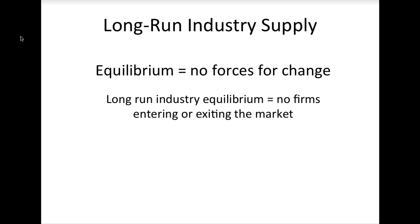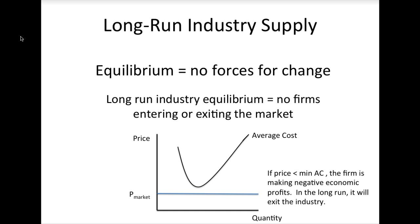In order to figure out what conditions will characterize long-run equilibrium, it is useful to think about the problem from a single firm's perspective. Recall that in the long run, if the market price is below the minimum of a firm's average costs, the firm will shut down and exit the industry because it is making negative economic profits. Thus, this must not be the situation that holds in long-run industry equilibrium.